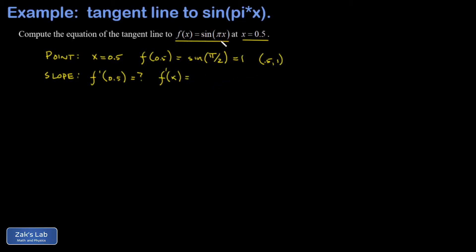And this requires the chain rule. I take the derivative of sine pi x with respect to pi x, and that just gives me cosine pi x. And then the chain rule says I have to tack on the derivative of pi x with respect to x, which is just pi. So I'm going to put that out in front.